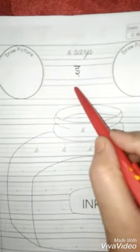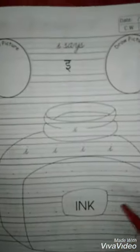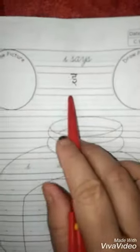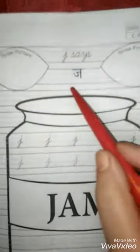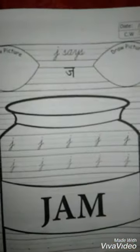I says e, ink. I says e, ink. J says jo, jam. J says jo, jam.